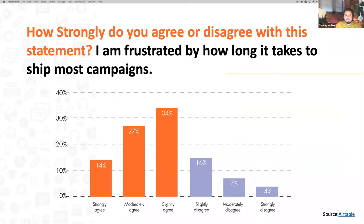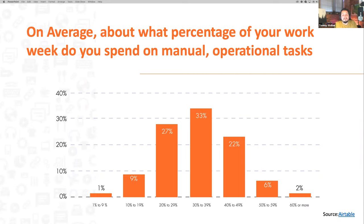Looking further at the Airtable data — what percentage of your work are you spending on manual operational tasks? A lot of people go all the way up to 50% of their time working on manual tasks. This can mean anything from double entry to sending out the same email over and over again, to chasing requests from other people.